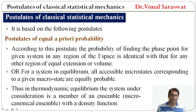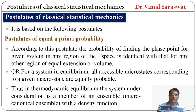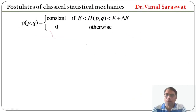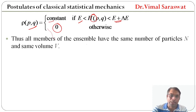In thermodynamic equilibrium, the system under consideration is a member of an ensemble with a density function. This ensemble is the microcanonical ensemble — one of three types, the others being the canonical ensemble and grand canonical ensemble, which will be discussed separately. The density function ρ is constant when the Hamiltonian lies between E and E + ΔE, and zero outside that range. All members of the ensemble have the same number of particles N and the same volume V.